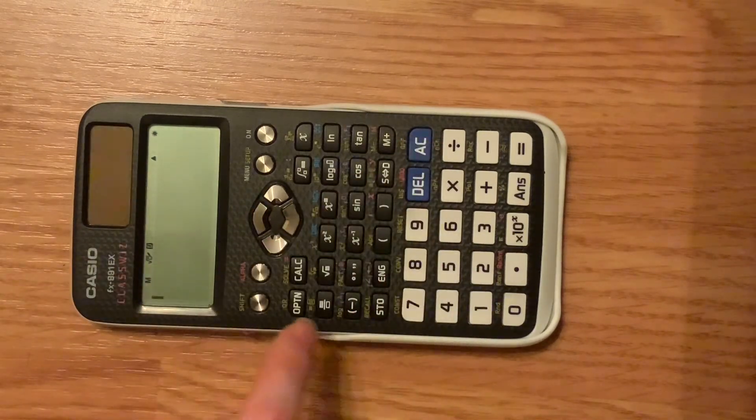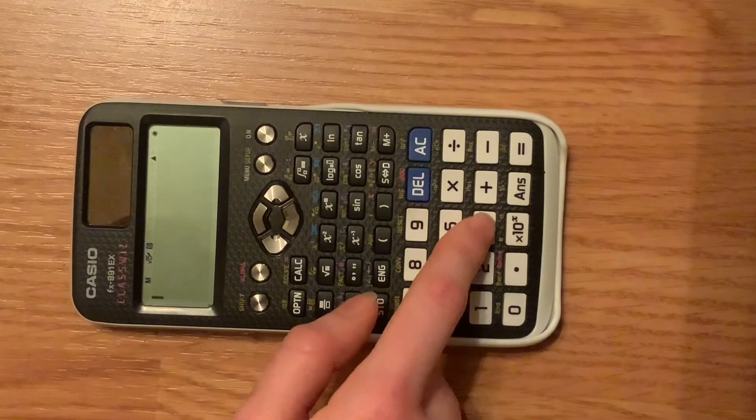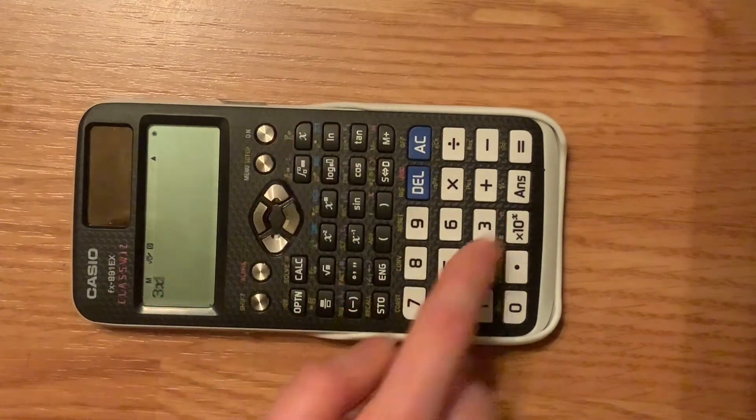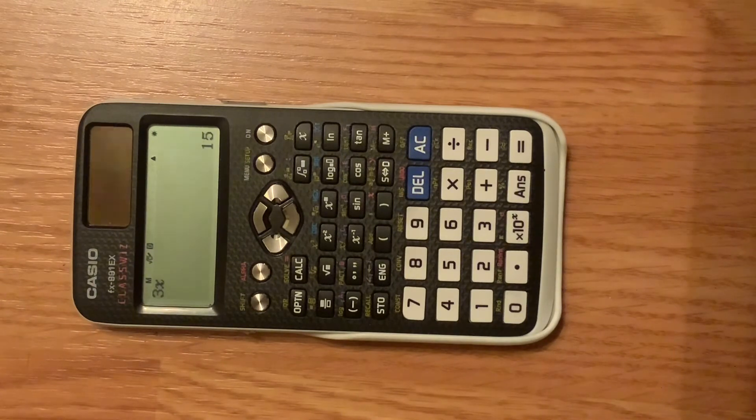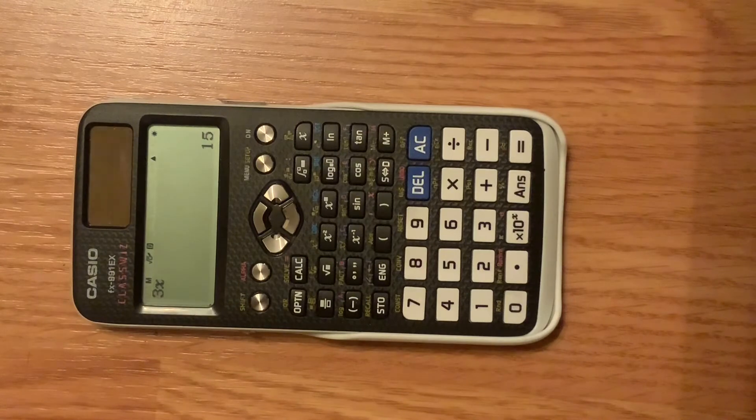Then you'll type in the second half of your equation. In this case, 3x equals, and it's also 15. And if you get the same value for both sides of the equation, you'll know that your answer is correct.